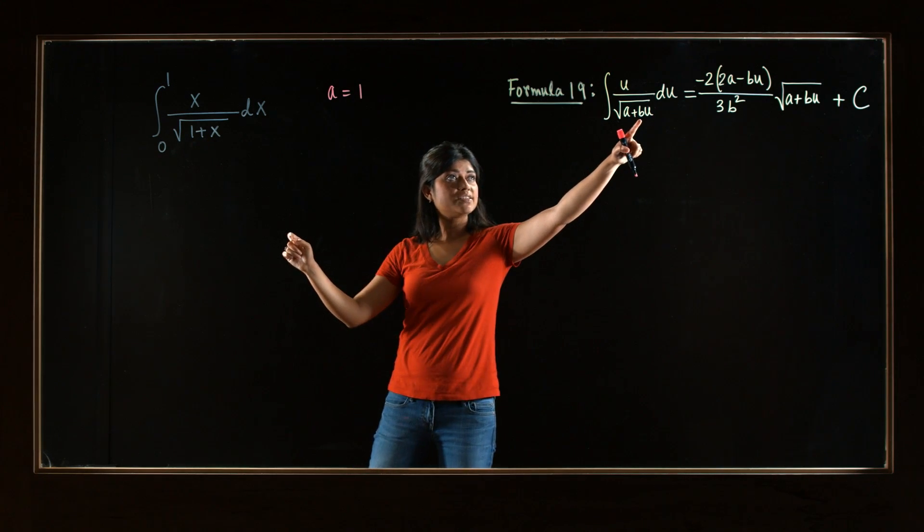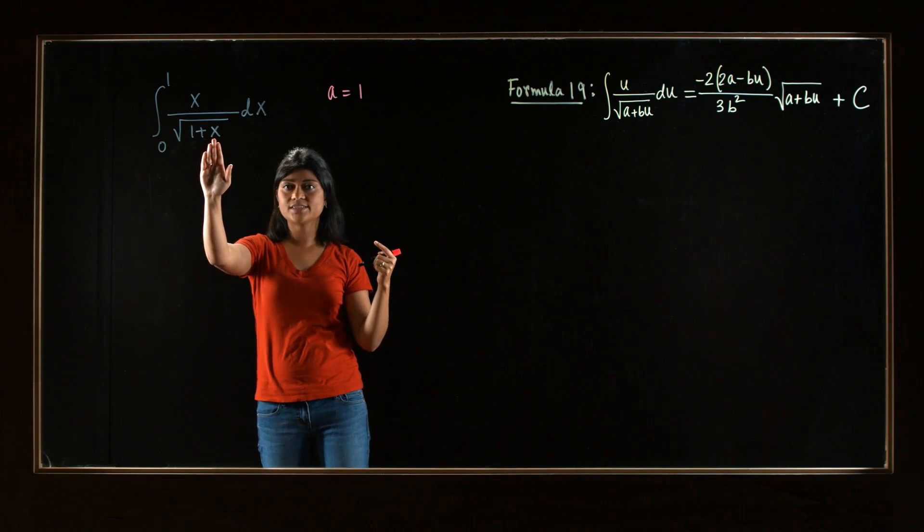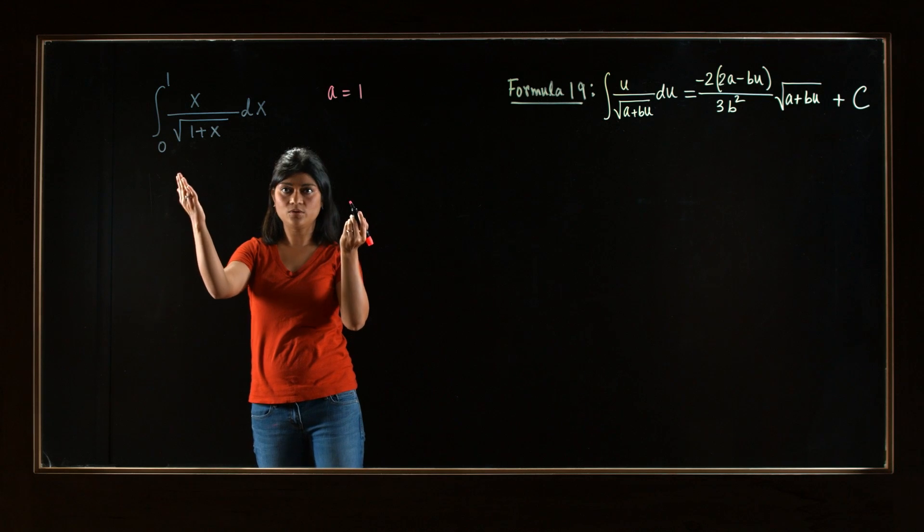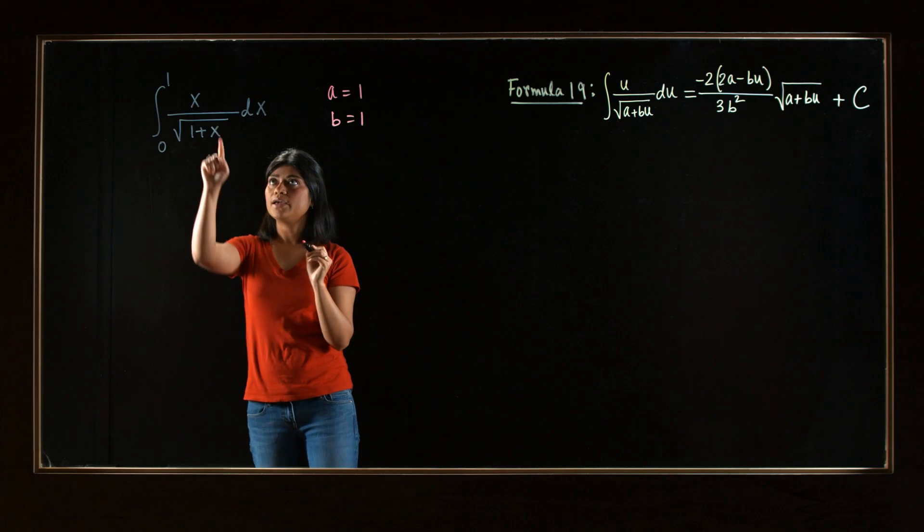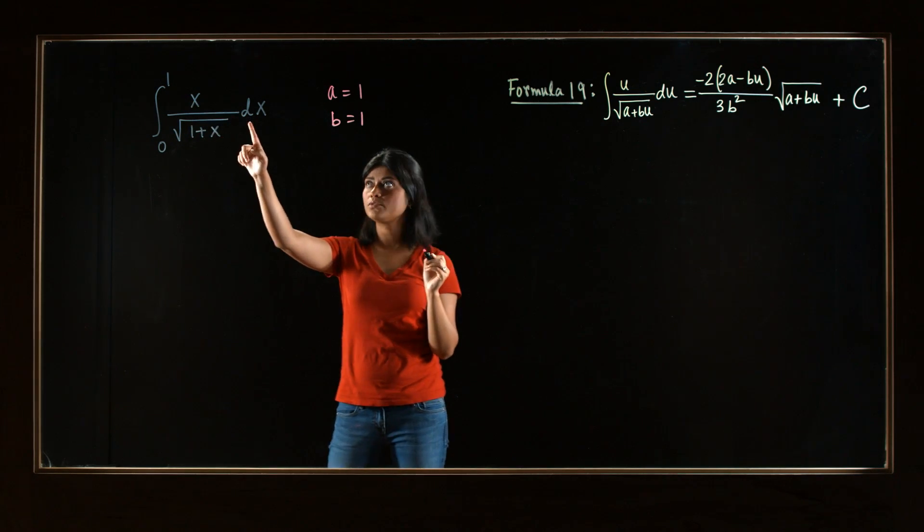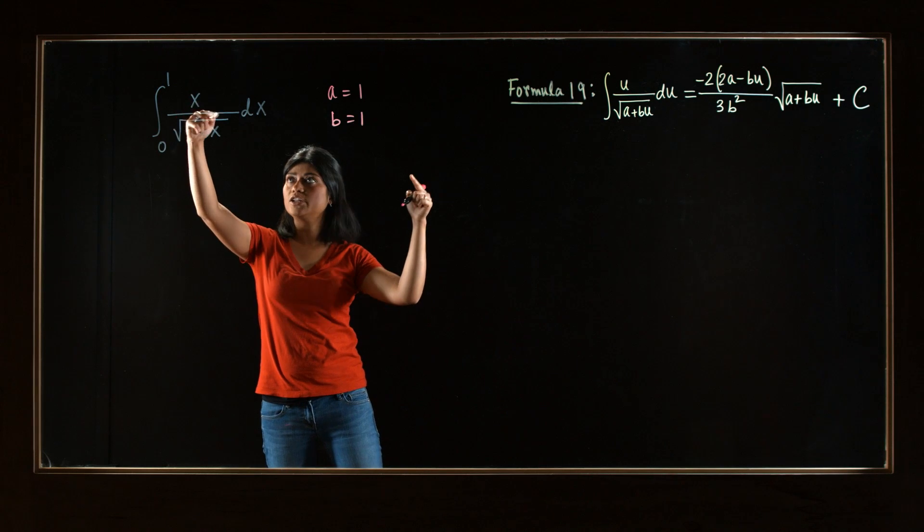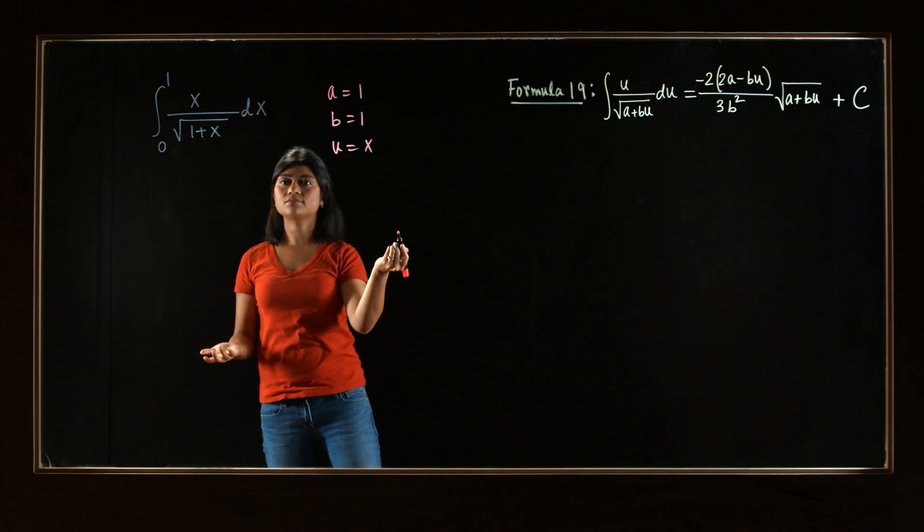Now, b is a constant that's attached to the variable, and the variable is x. And what is attached to x? Nothing. That means 1 is attached to it. So b is 1 as well. And then the variable u. Look, u is in the numerator, and in the numerator we have x. So u is x as well.